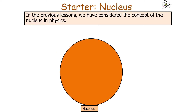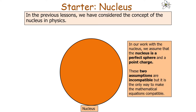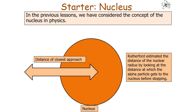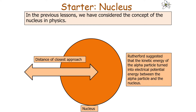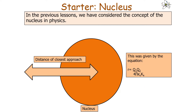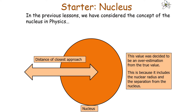In previous lessons we considered the concept of the nucleus in physics. In our work with the nucleus, we assume that the nucleus is a perfect sphere and a point charge. These two assumptions are incompatible, but it's the only way to make the mathematical equations compatible. Rutherford estimated the nuclear radius by looking at the distance of closest approach of an alpha particle. He suggested that the kinetic energy of the alpha particle turns into electrical potential energy, given by R equals Q1Q2 over 4 pi epsilon 0 times the kinetic energy. This was considered an overestimation because it includes not only the nuclear radius but the separation between the alpha particle and the nucleus.